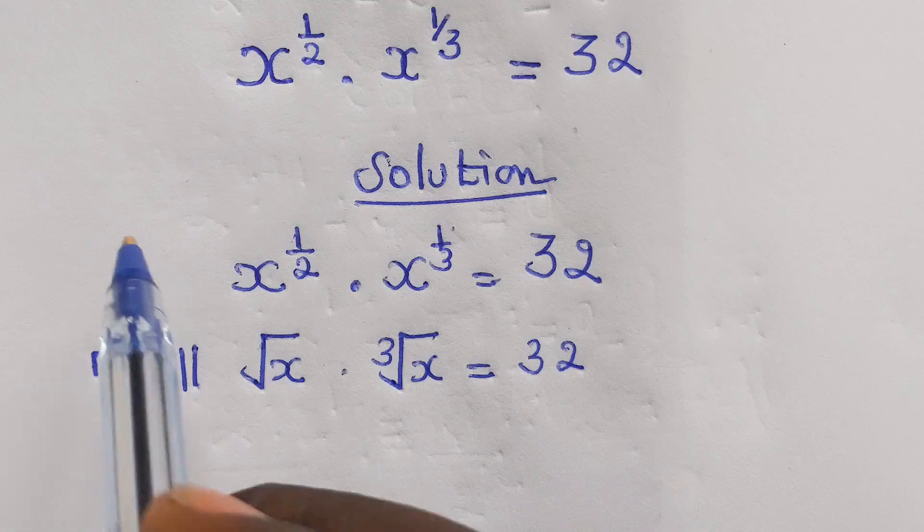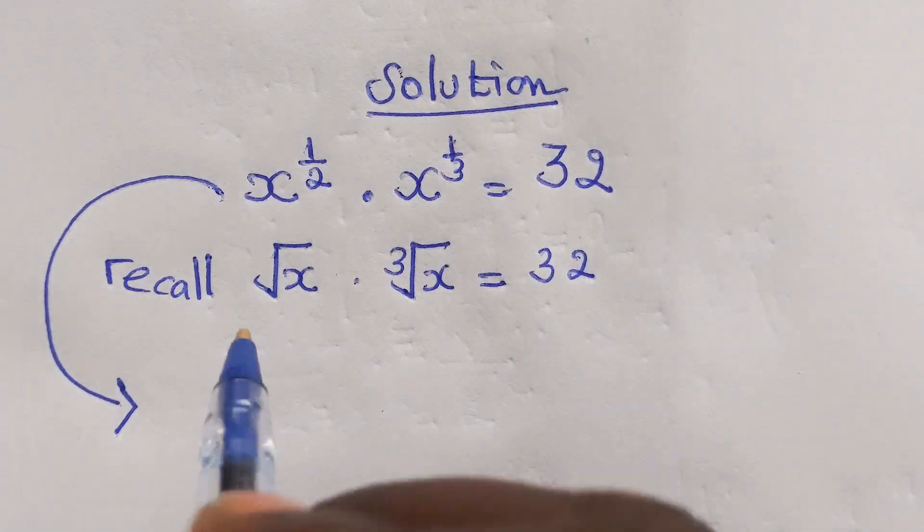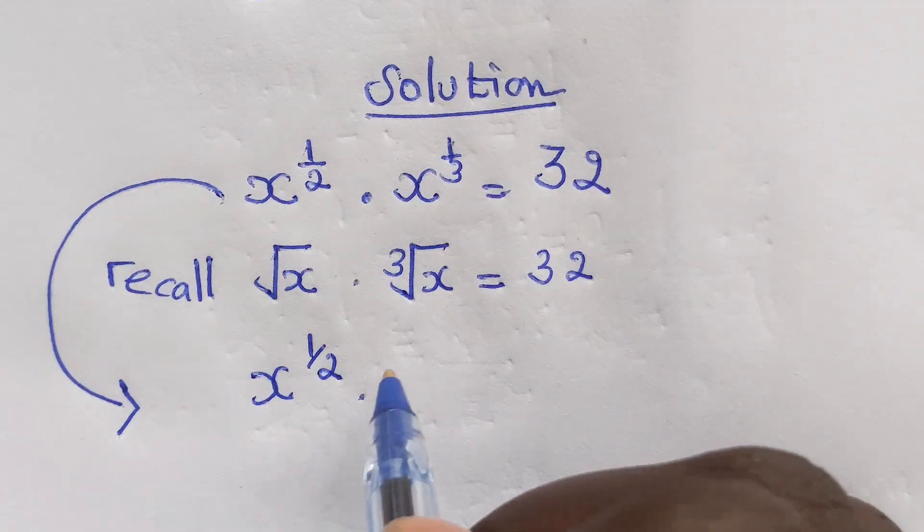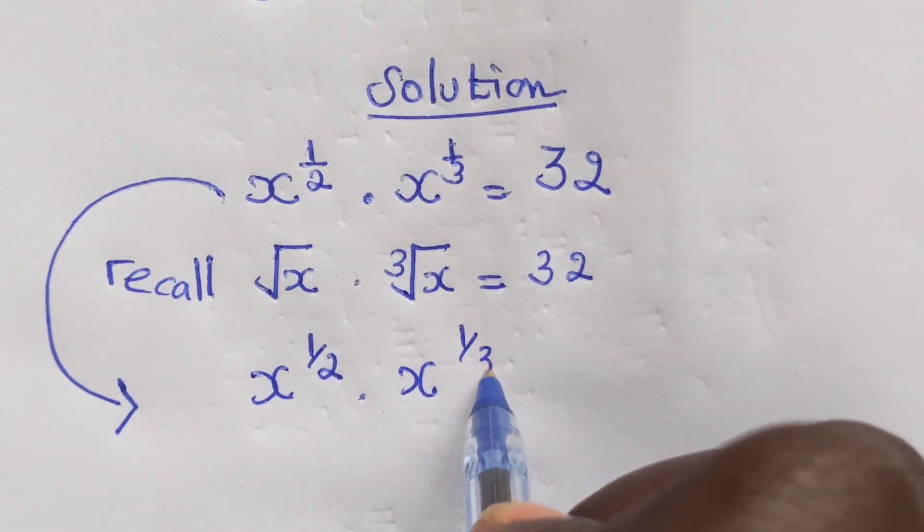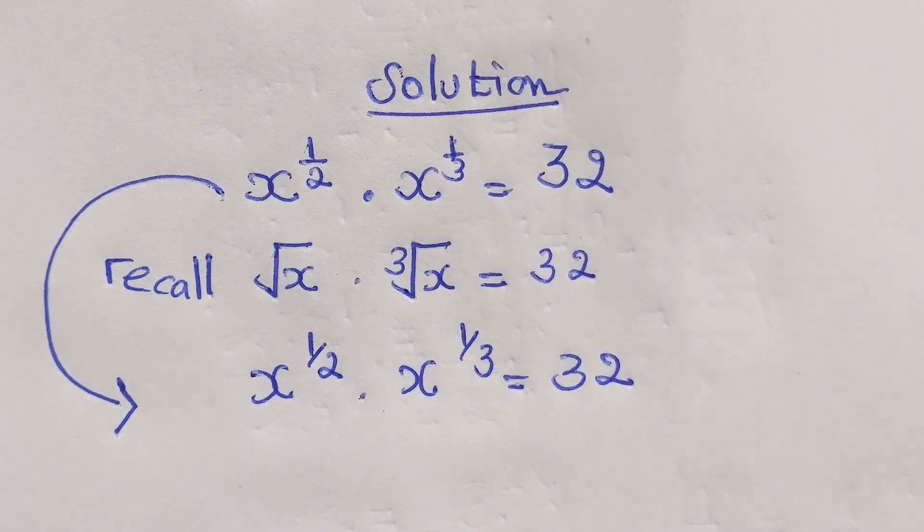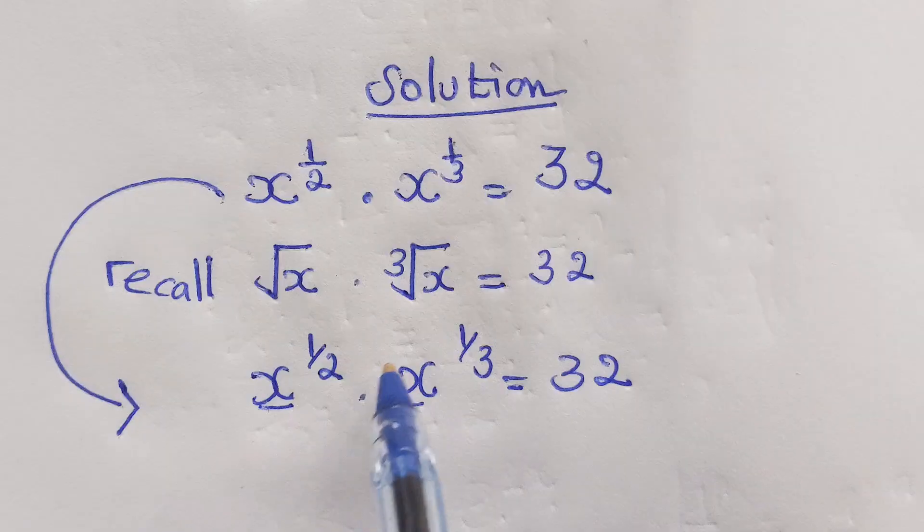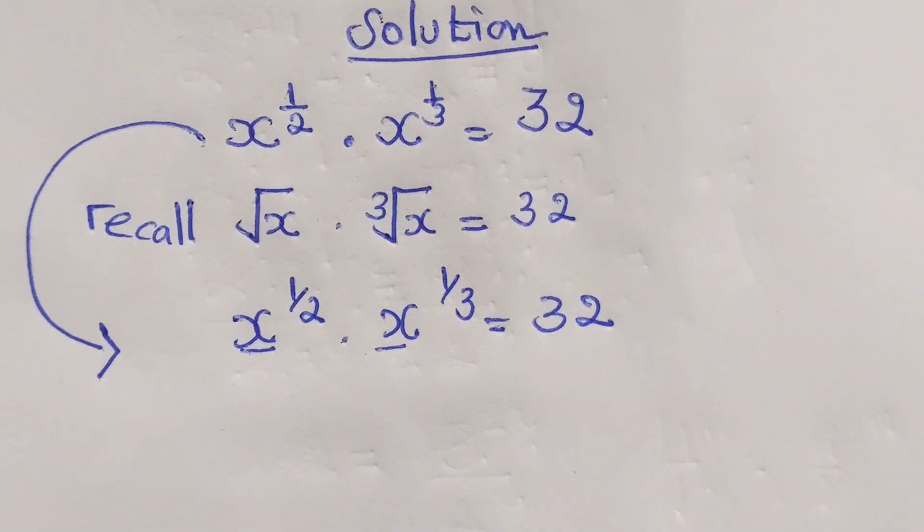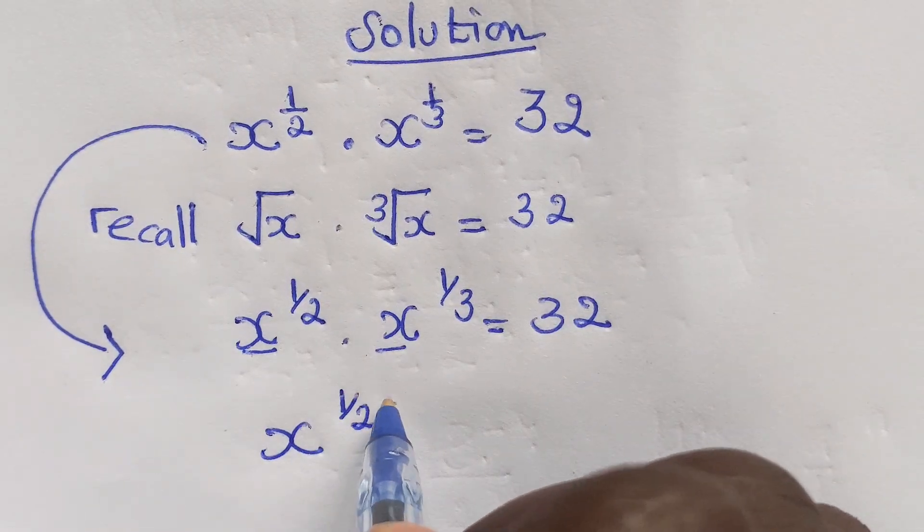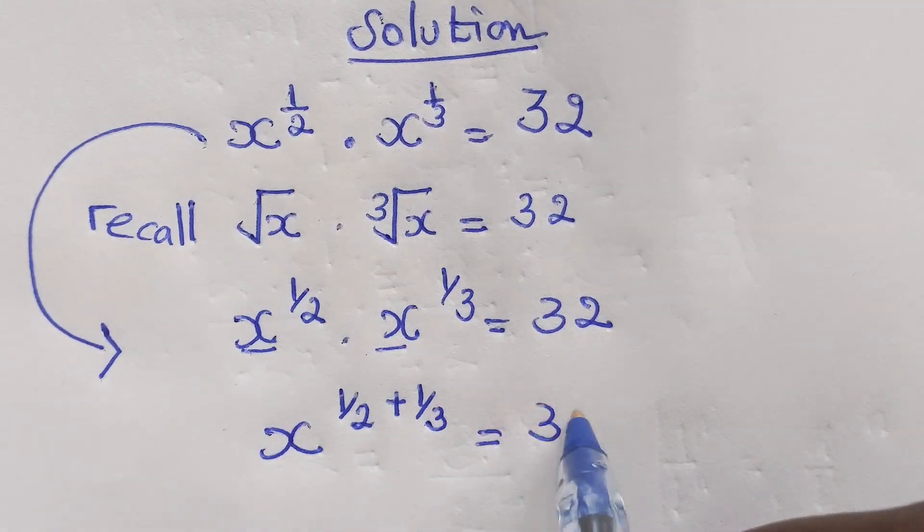And we shall continue right down here to get x power 1 over 2 times x power 1 over 3 equal to 32. And of course, down here we have same base. We shall add this power to get x power 1 over 2 plus 1 over 3 equal to 32.